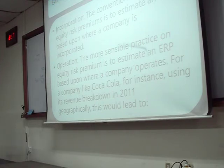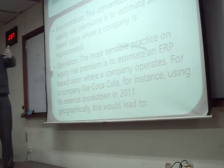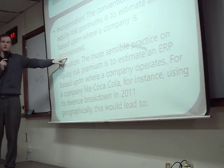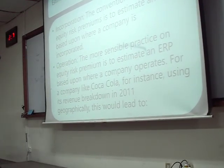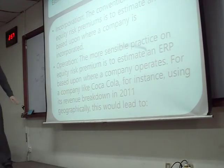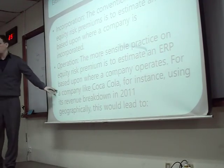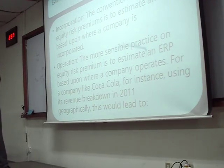So how can we know where the company gets its revenues? The conventional wisdom — the first answer people gave — was to use the country where the company is incorporated or registered. But actually, the more sensible practice is to estimate the ERP — equity risk premium — based on where the company operates.